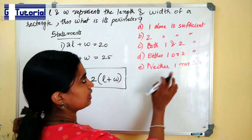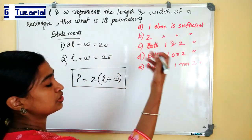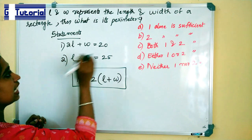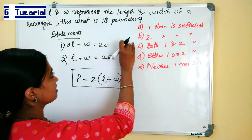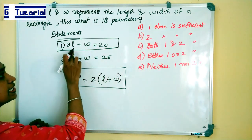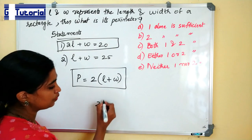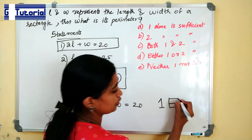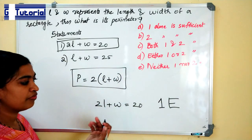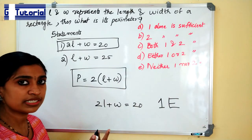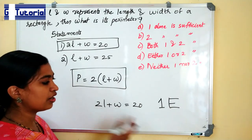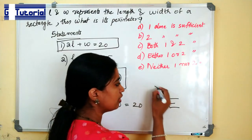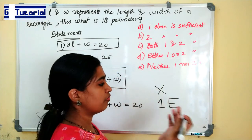Now we have to find which option is the correct answer. The method I adopt is: first read the question and then check only the first statement — 2L plus W is equal to 20. From this, we cannot find the individual values of L or W. If two equations are given, then we can solve and find the answer. Since we cannot find L or W from statement one alone, we are not able to find the perimeter. So option one is not possible, and either one or two also fails.